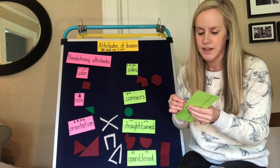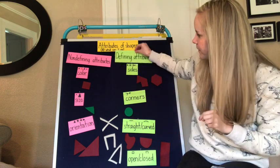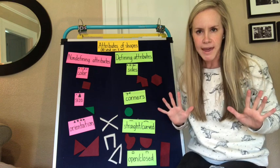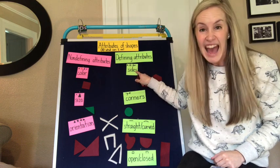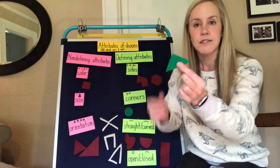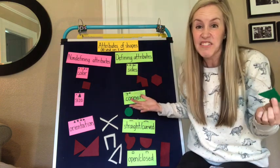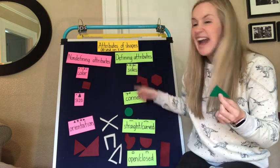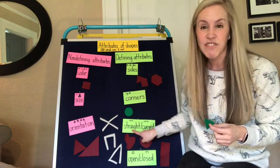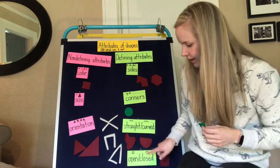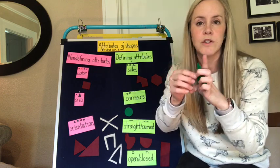But these green ones over here are called defining attributes. Defining attributes make a shape a shape. In order to be a triangle, it has to have three sides — one, two, three. In order to be a triangle, it has to have three corners — one, two, three. In order to be a triangle, it has to have all straight lines, and it has to be a closed shape like this one.